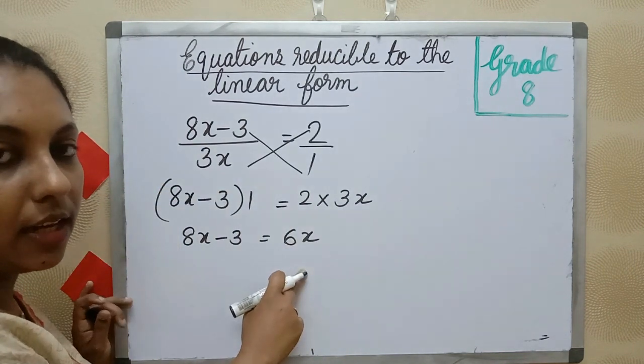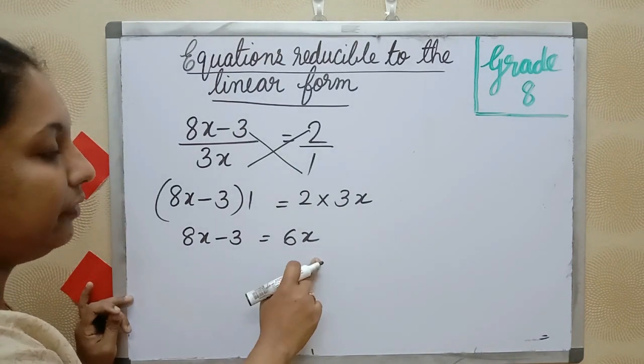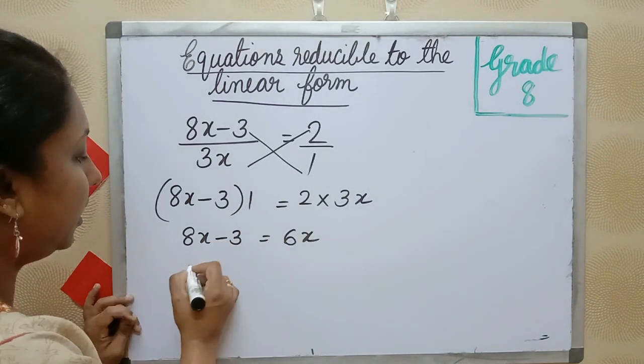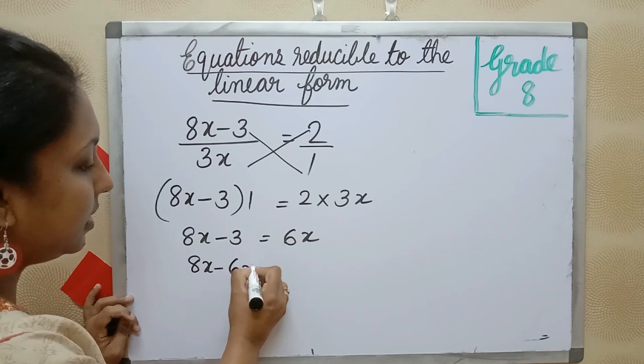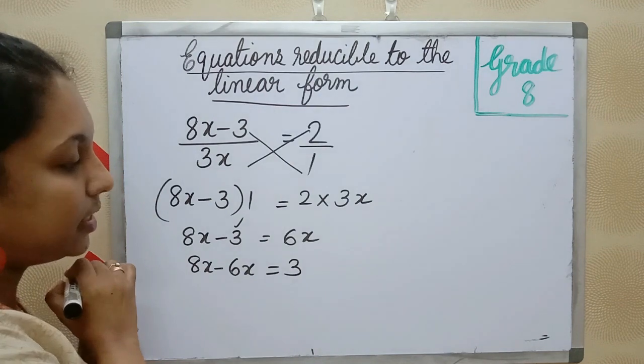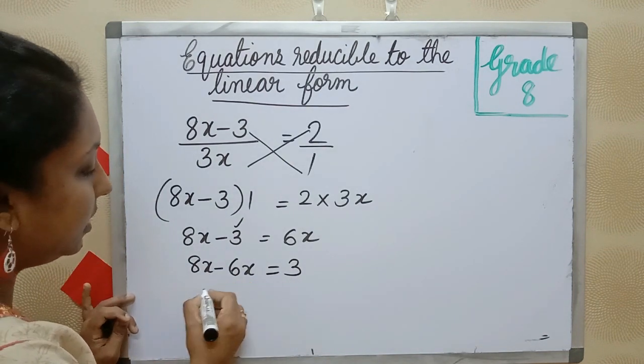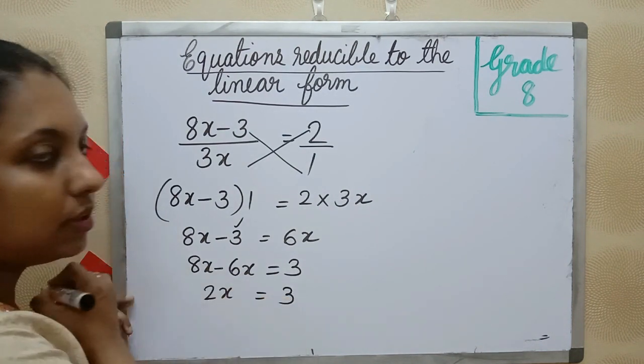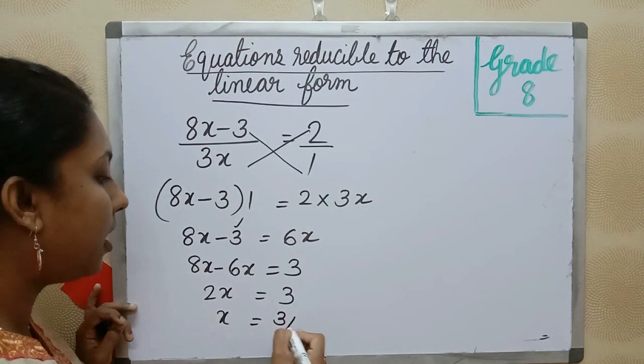This is a linear equation. Now easily we can find the value of x using transpose method. That is 8x minus 6x is equal to 3. Minus 3 becomes plus 3 while transposing to RHS. 2x is equal to 3. Then x is equal to 3 by 2.